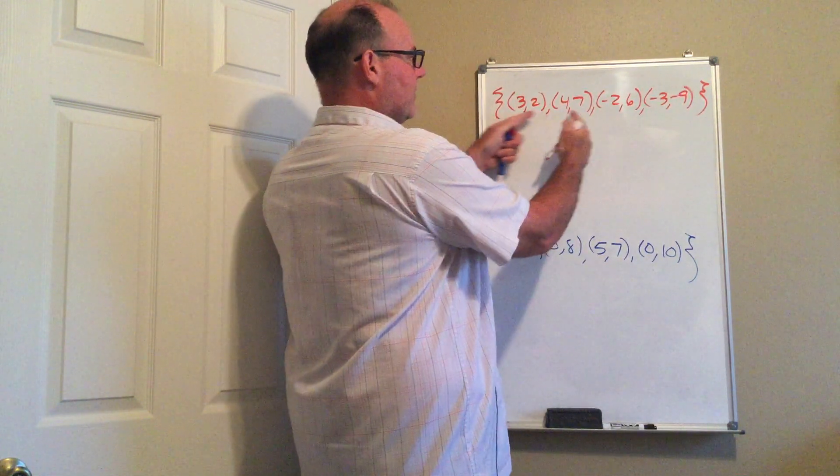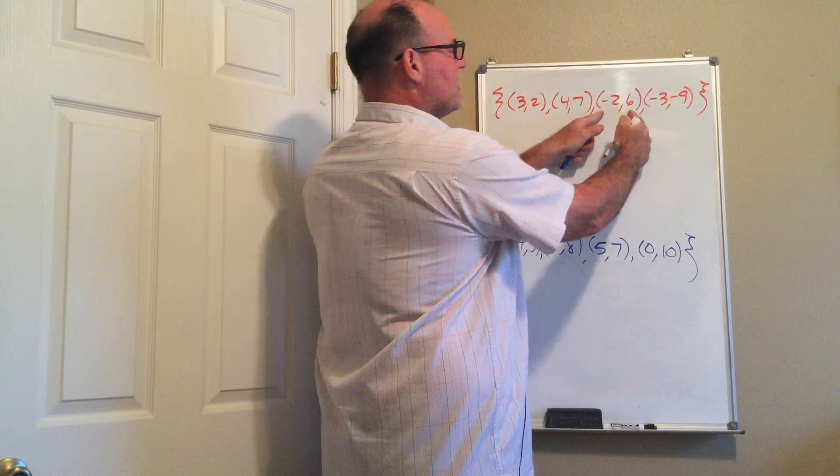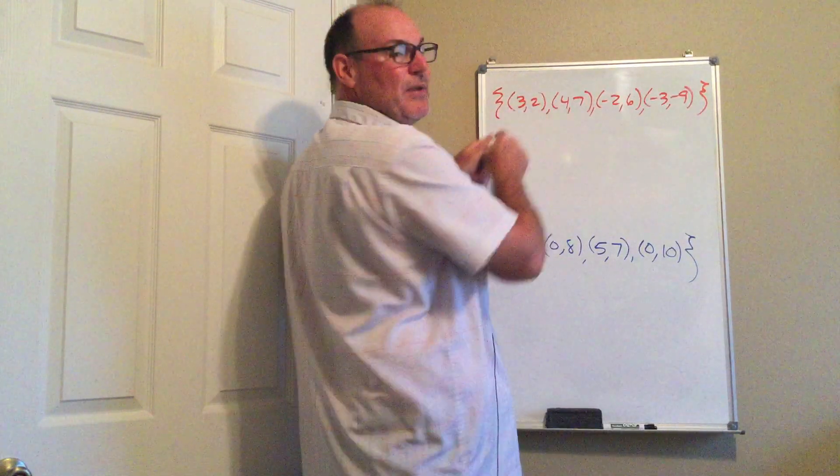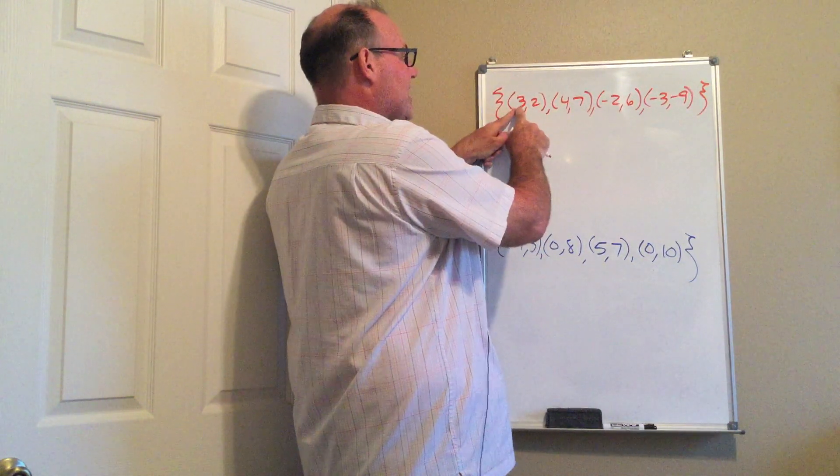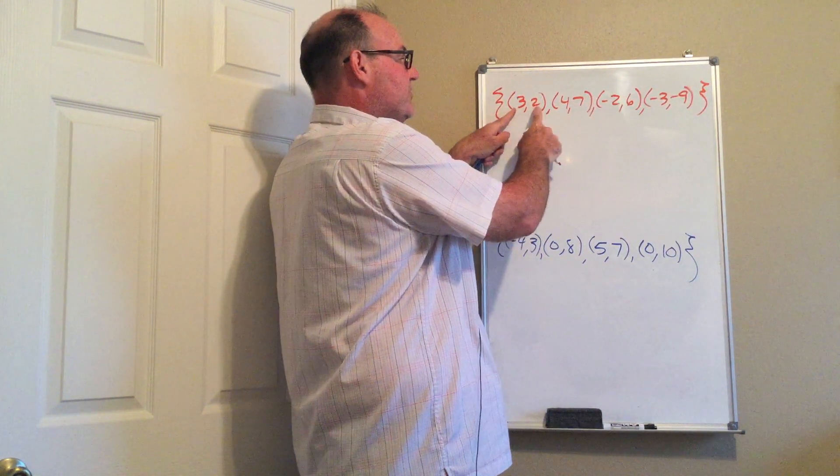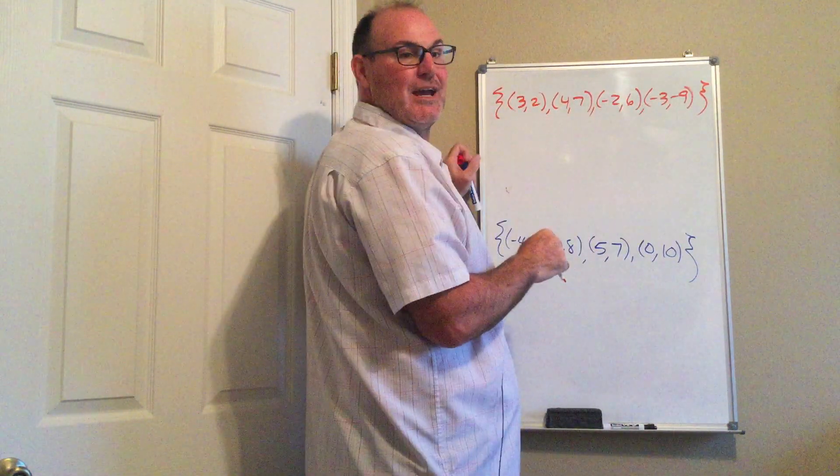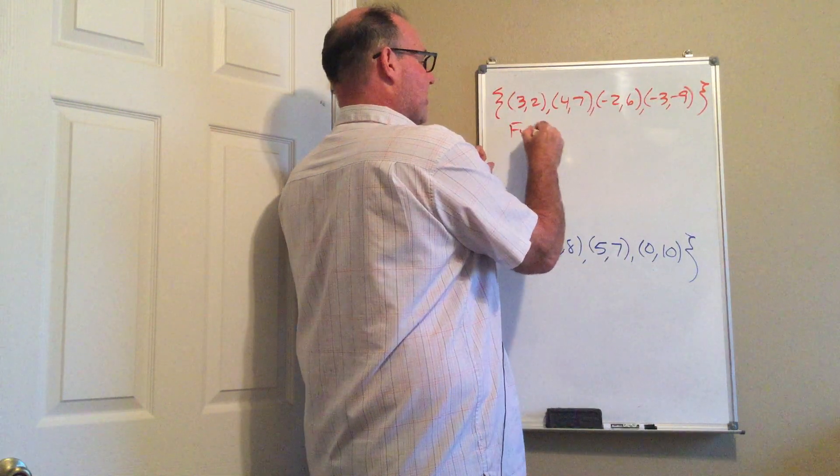So first, I've got (3, 2), (4, 7), (-2, 6), (-3, 9). Notice, none of the x repeat. That means 3 has one y value of 2, 4 has its own y value of 7, negative 2 has 6, negative 3 has 9. So this is a function.